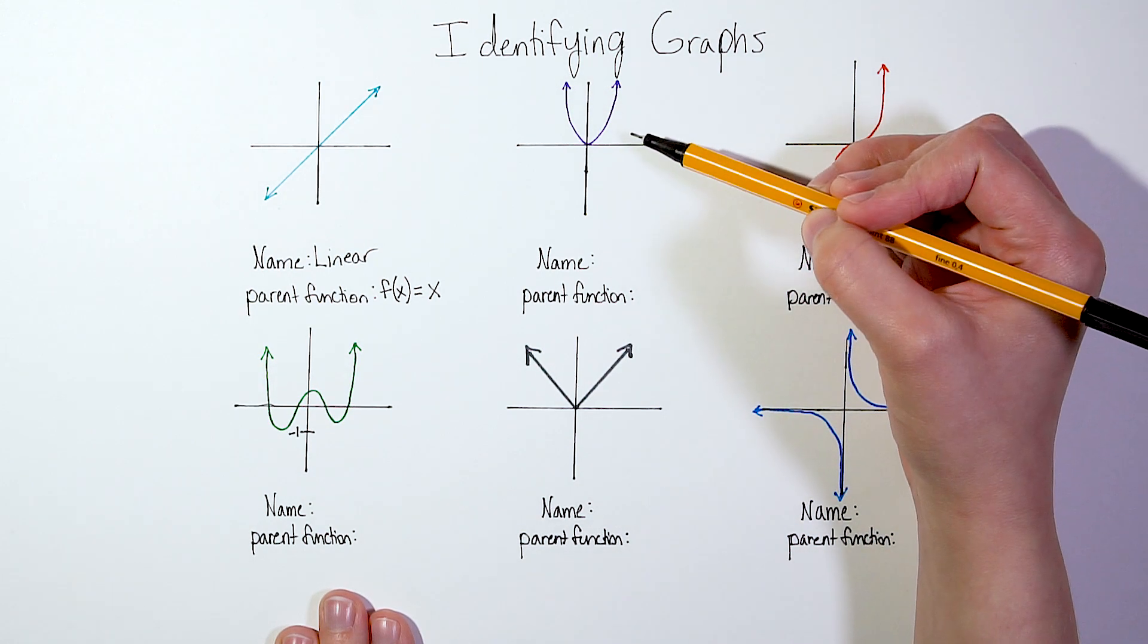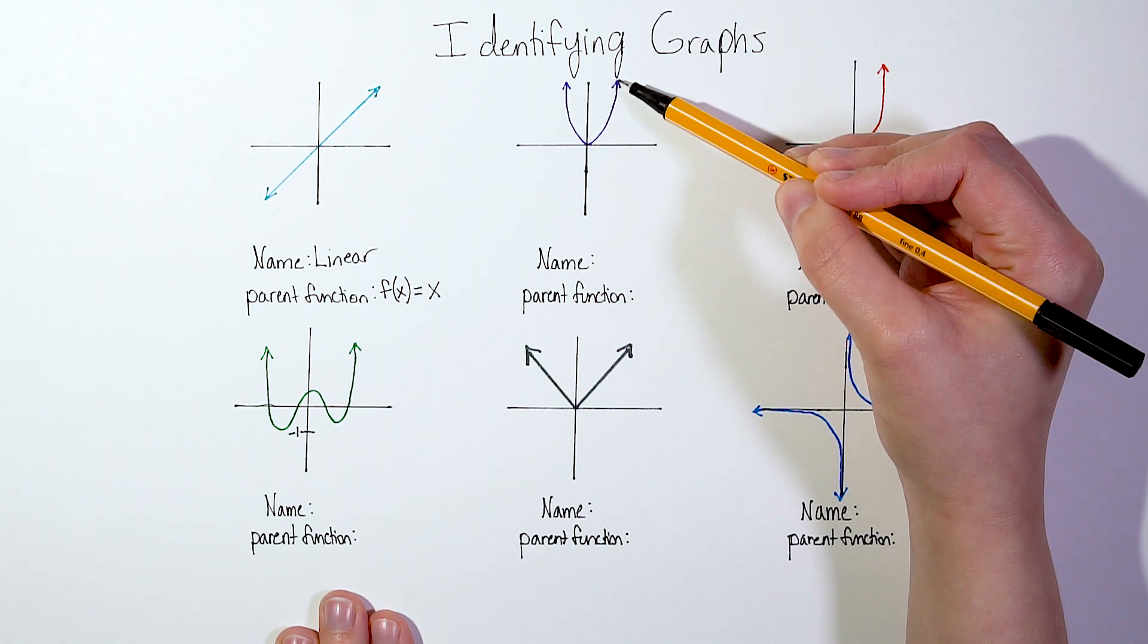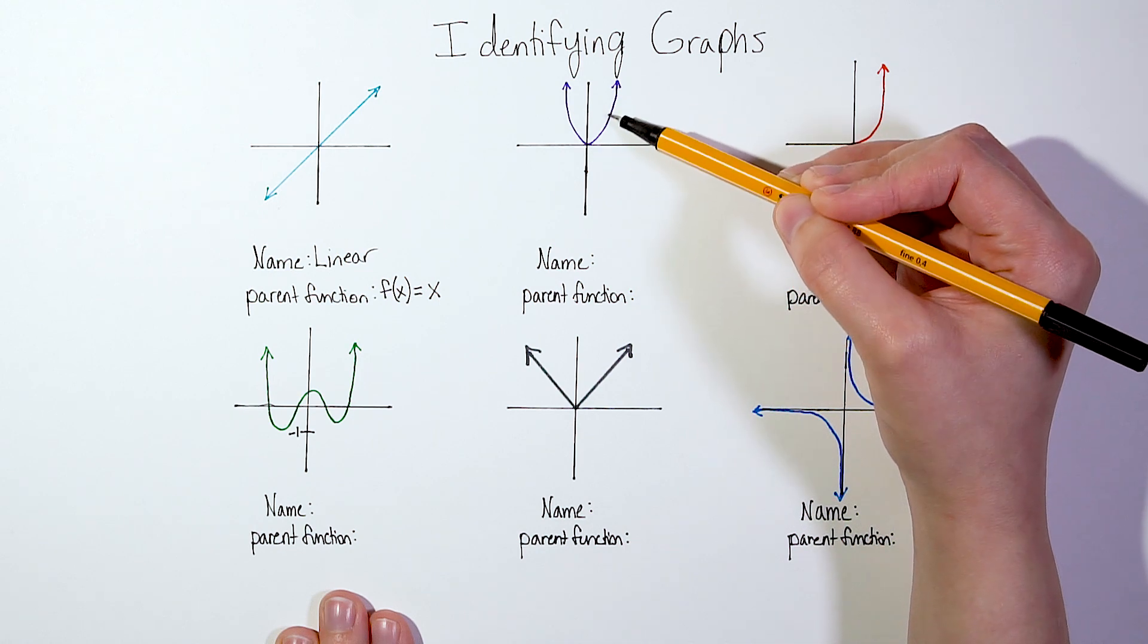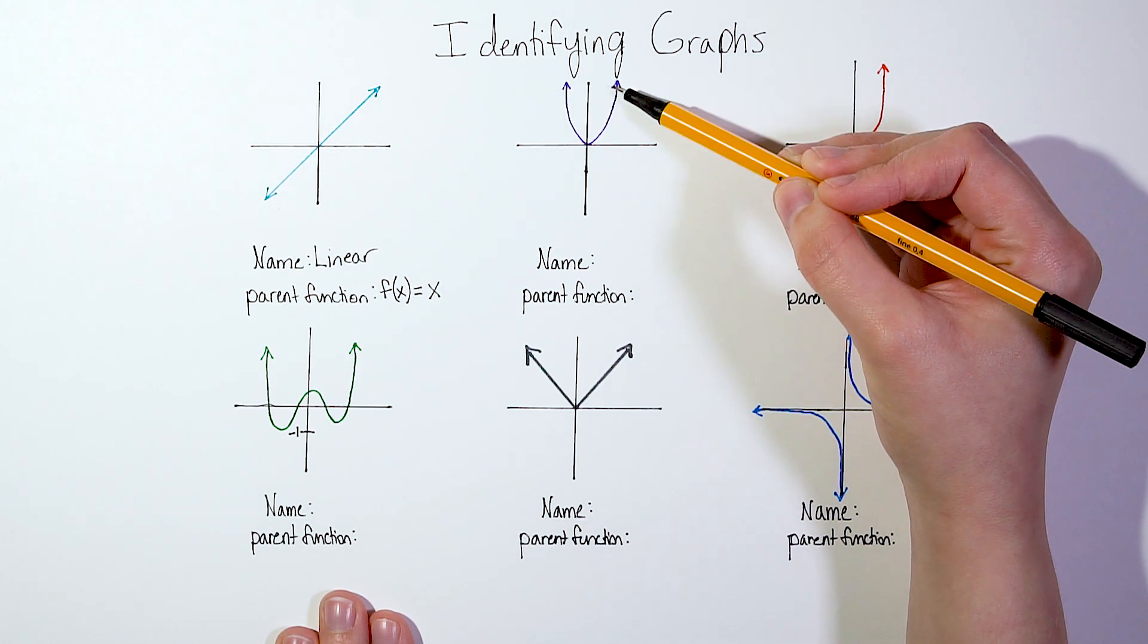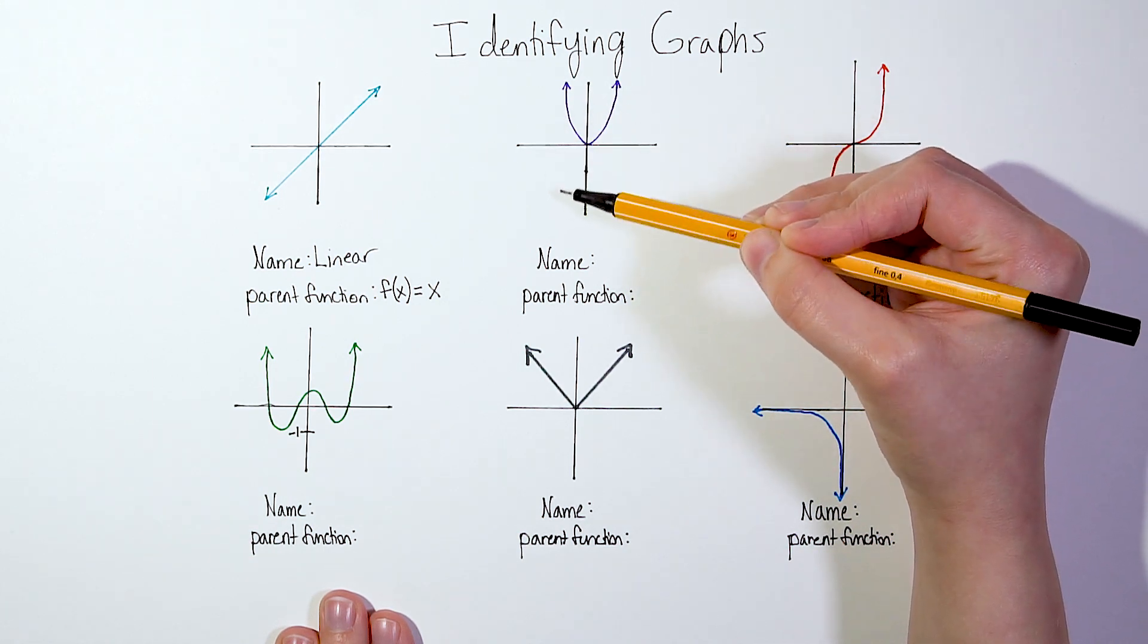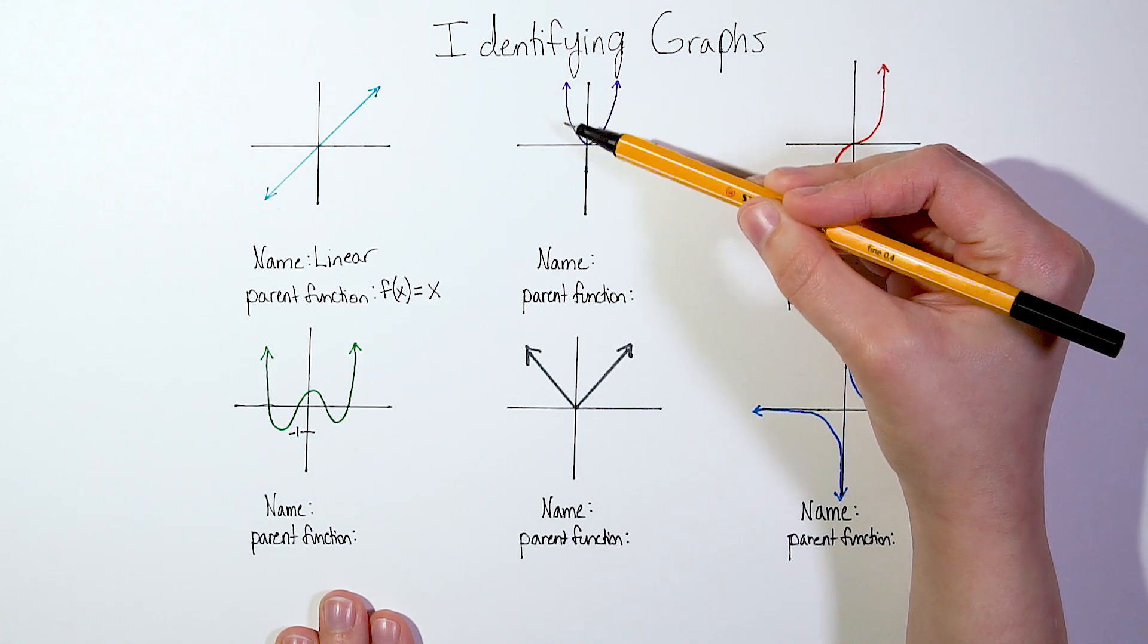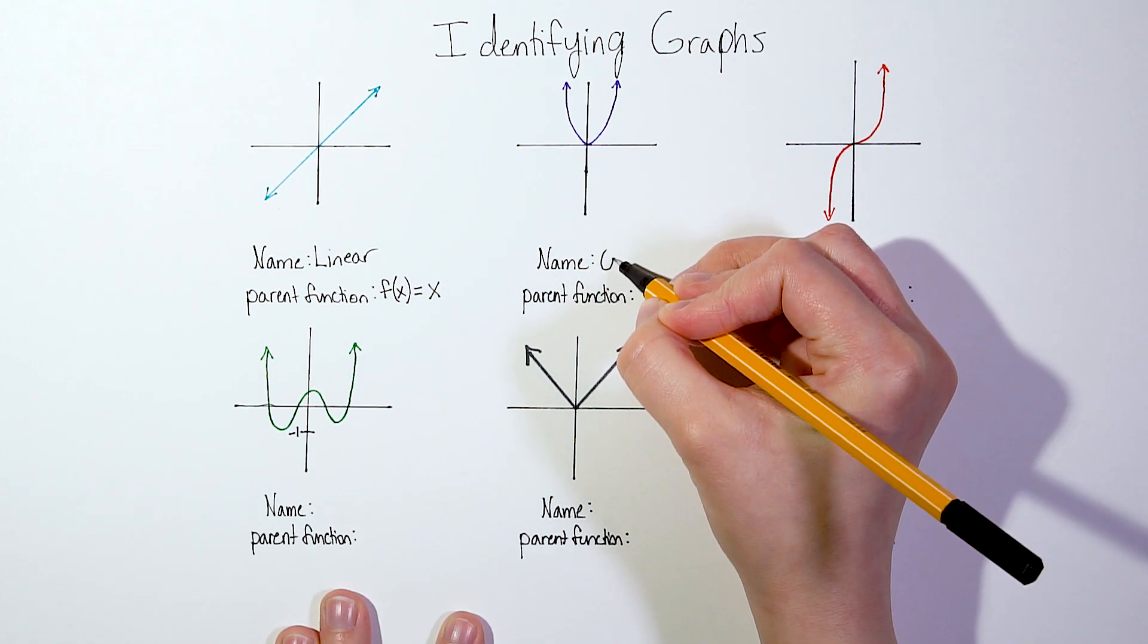This next graph over here, this purple one, notice some characteristics here. This is a nice U shape. We call this a parabola. And this one is facing upward. Our arrows are pointing upward. It could be pointing downward. It could look more like a frowny face instead of a smile. But anytime you see this U-shape parabola, that is called a quadratic.